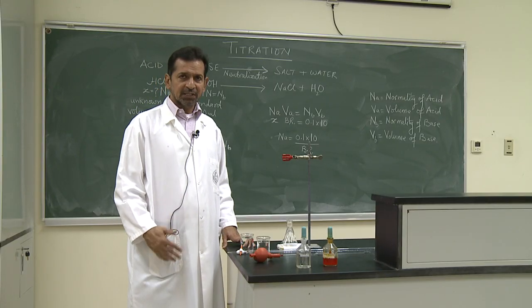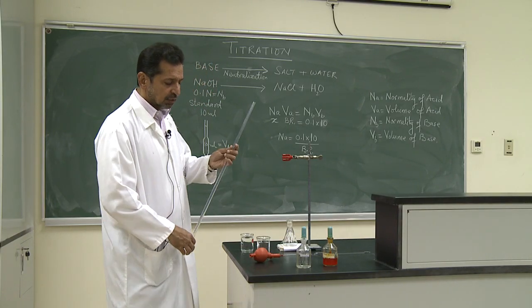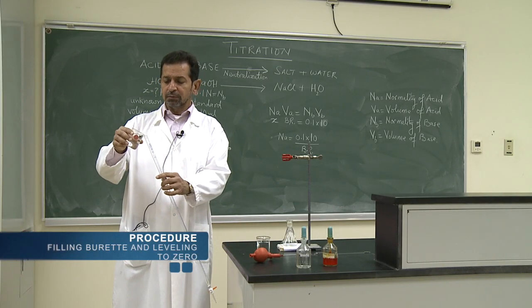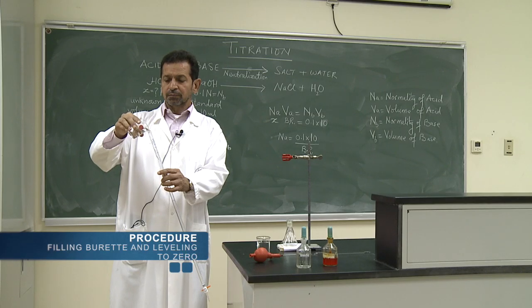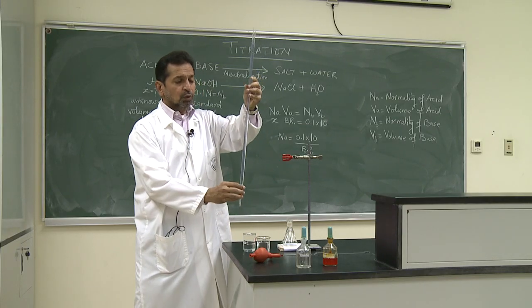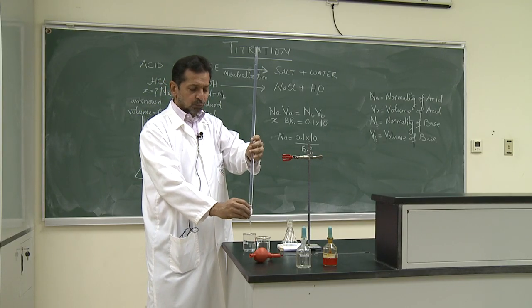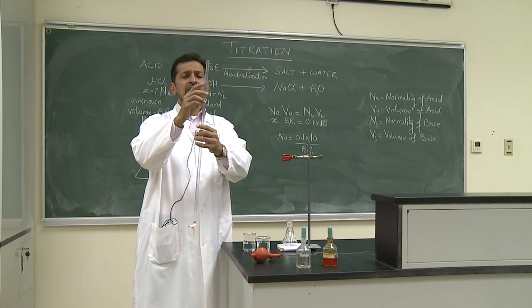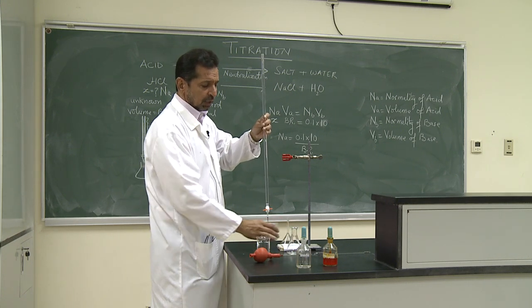After washing and rinsing, the next step is filling the burette with the acid. We simply pour the acid into the burette. After filling the burette, we have to remove the air from the jet by opening the knob completely and passing the solution through the nozzle. Doing this may lower the level of acid, but it should still be above 0. After filling, we need to set the level to exactly 0.